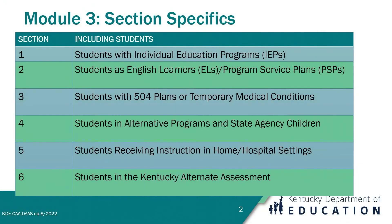Welcome to the Inclusion of Special Populations Training 703KER5:070. This is Module 3, Section Specifics, and this module is the third of eight that make up this training series. Module 3 takes a more in-depth look at each section presented in the regulation. There are six sections within the Inclusion of Special Populations regulation. We will go into a brief summary of each, but for specifics on any given section, it is highly advisable you consult the regulation for an in-depth review.